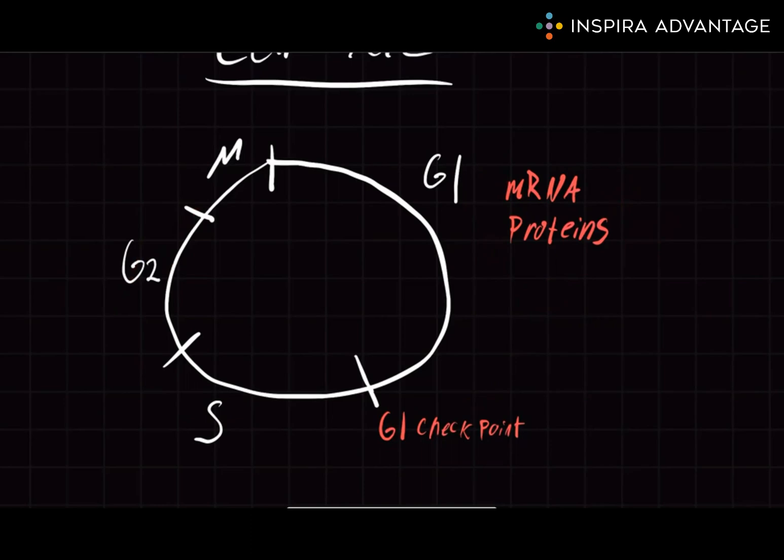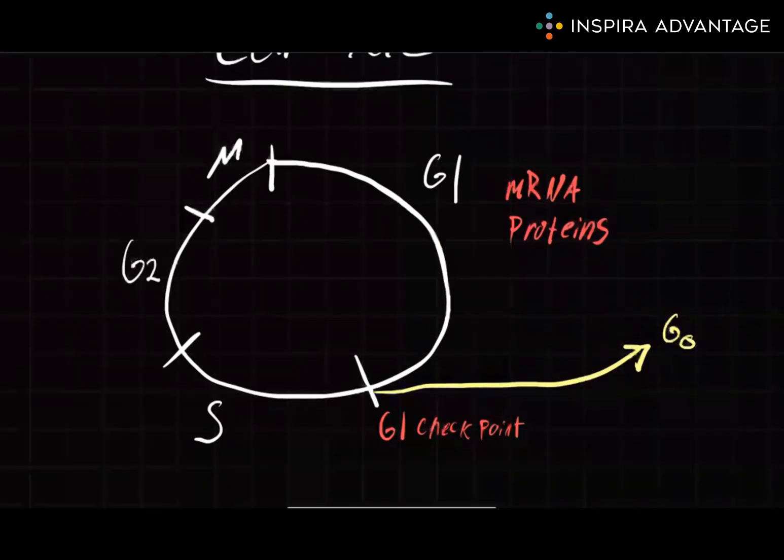The third option is that the cell will check and decide that it never wants to divide and enter what's called the G0 phase. In G0, the cell will never divide. The most popular type of cell stuck in G0 that the MCAT is likely to test are neurons.